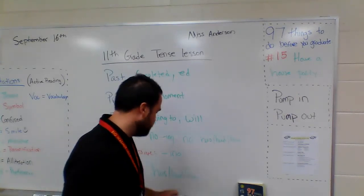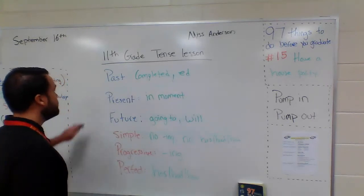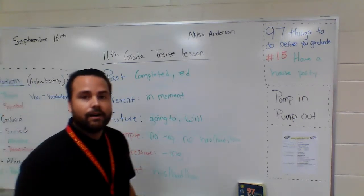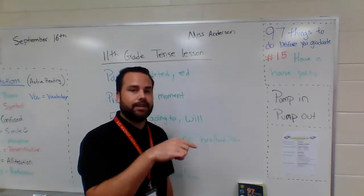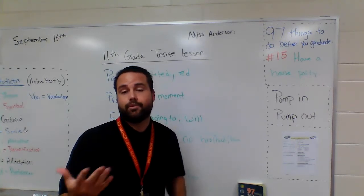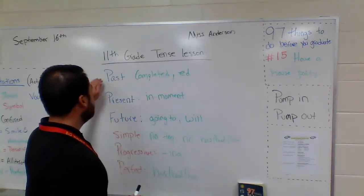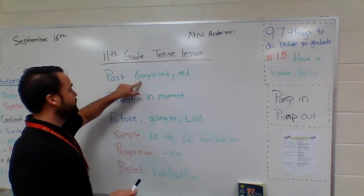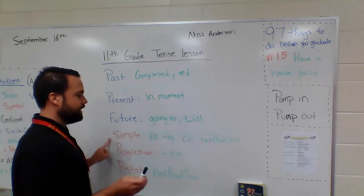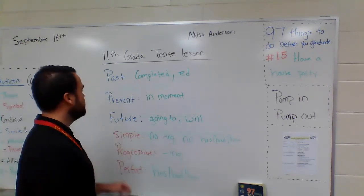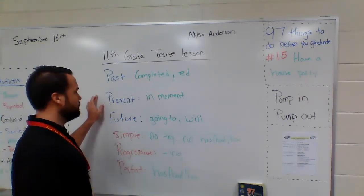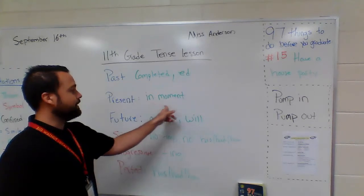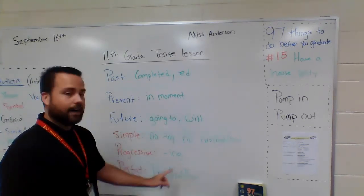The simple form of a tense has no '-ing' and no participle. The progressive form has an '-ing' ending. You can have any combination of these things, but you always must have one tense word and one or two of the form words. For example, we can have a past tense verb that is simple — a completed action with no '-ing' and no participle. We can also have a present tense verb that is progressive — something happening in the moment with the '-ing' ending.